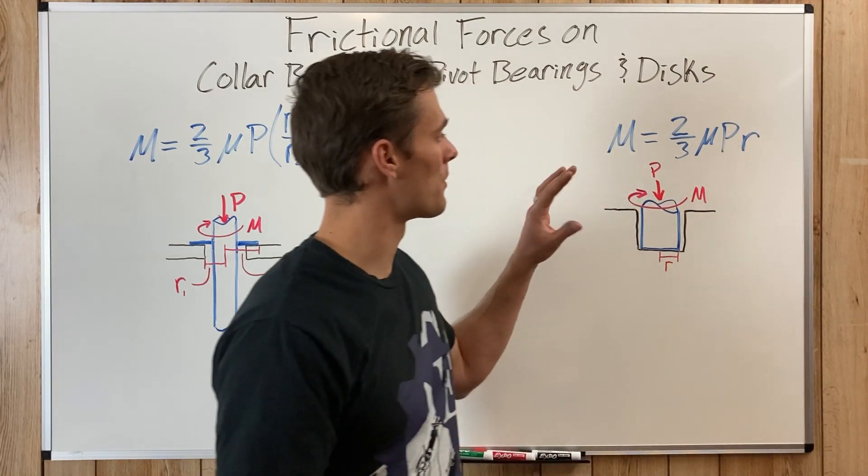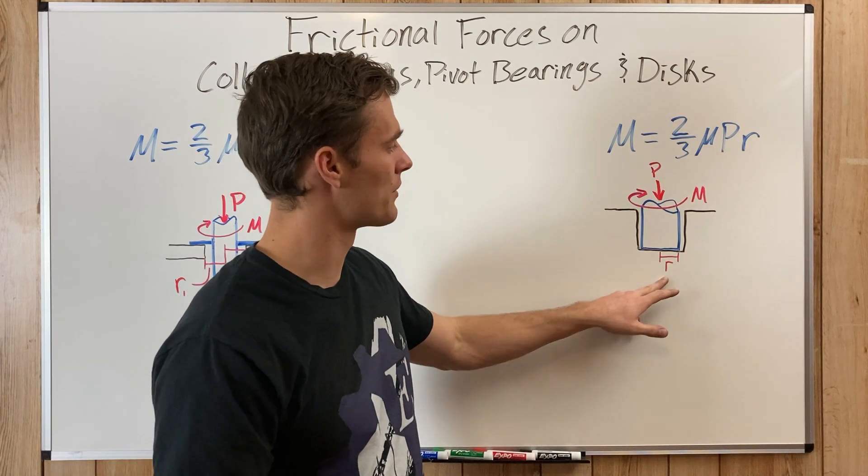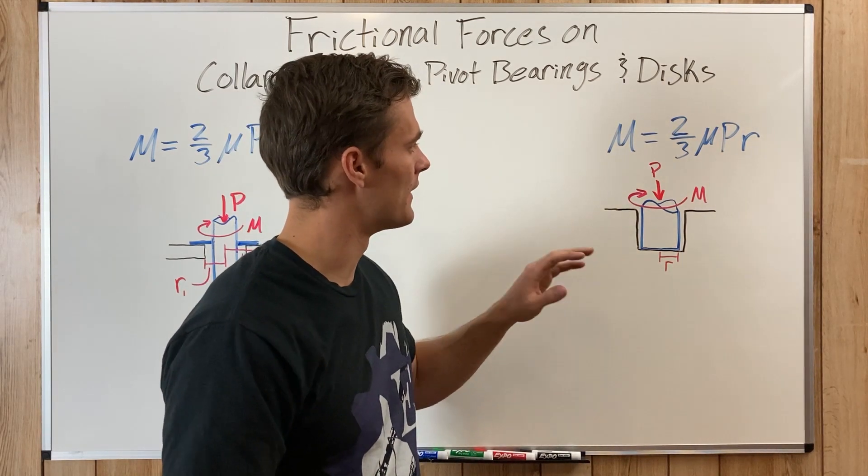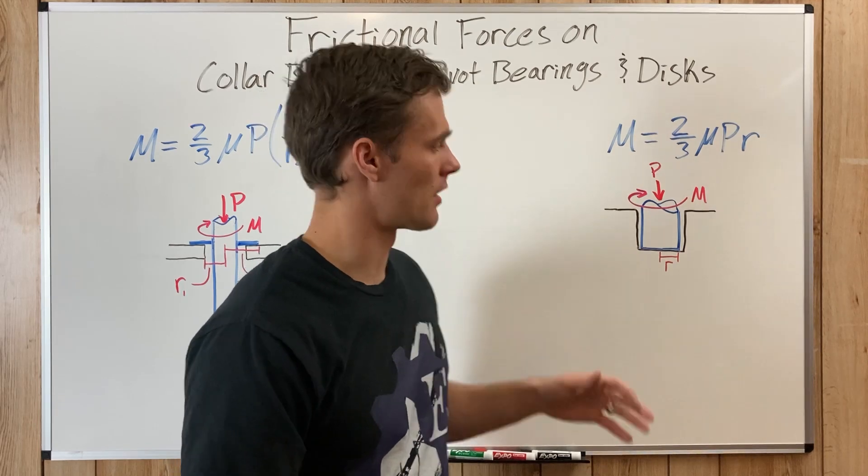So this one's a lot more simple, because there's only one radius involved. And then the rest of the variables are all the same.